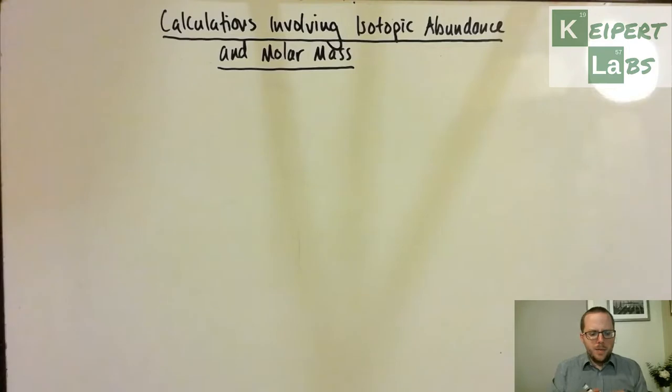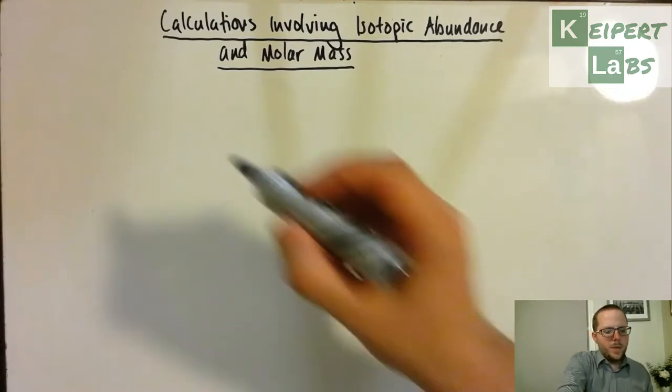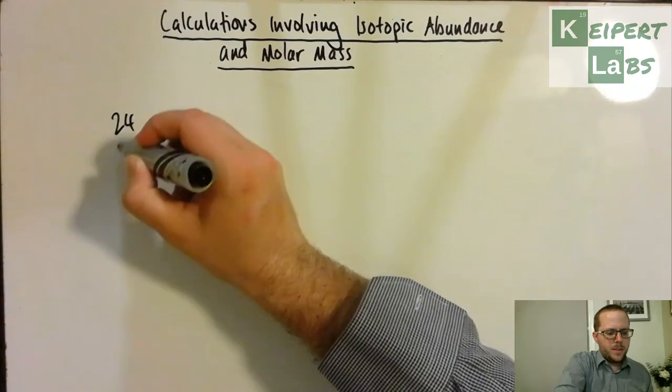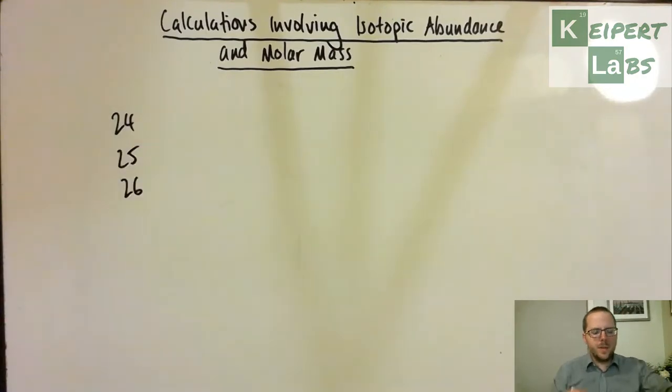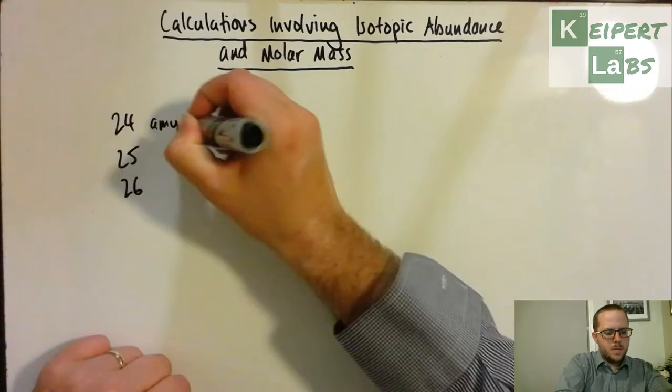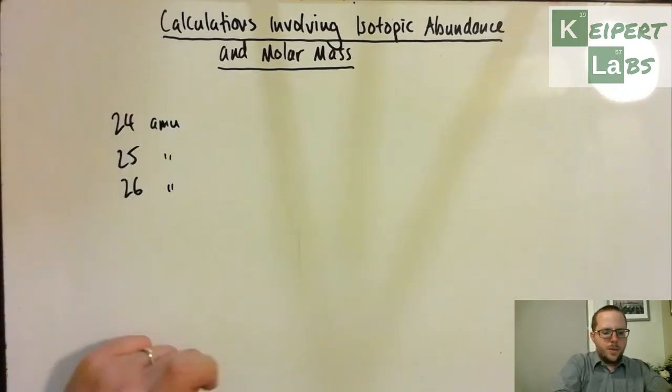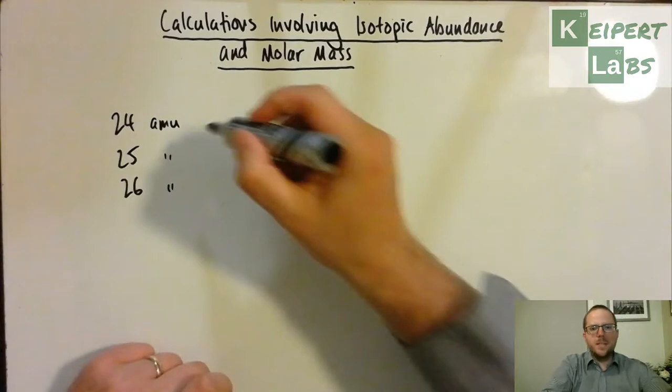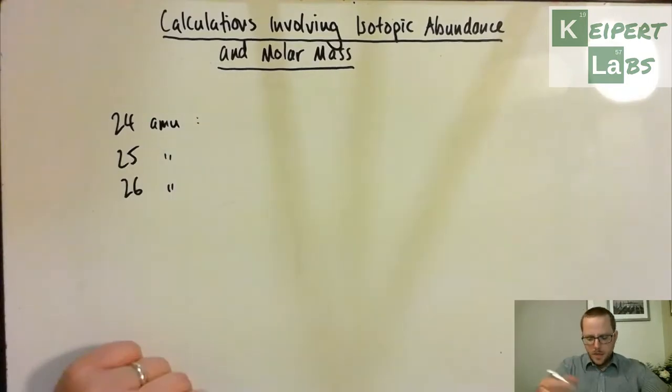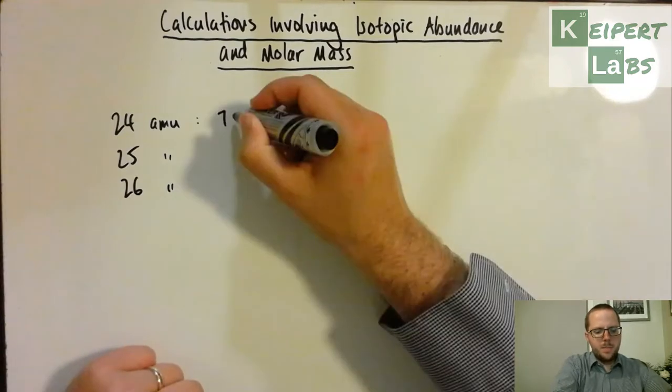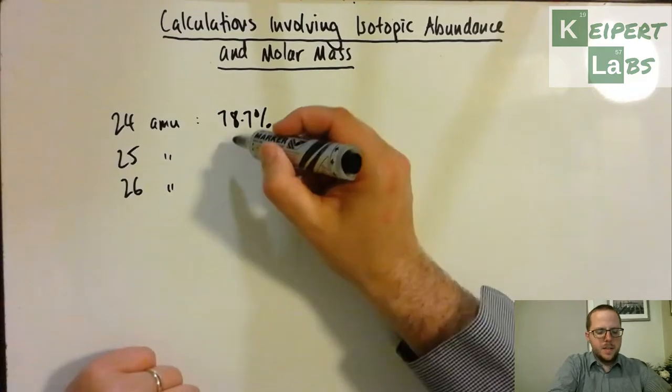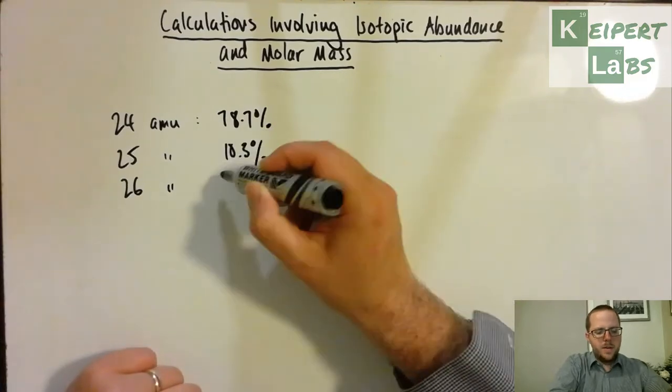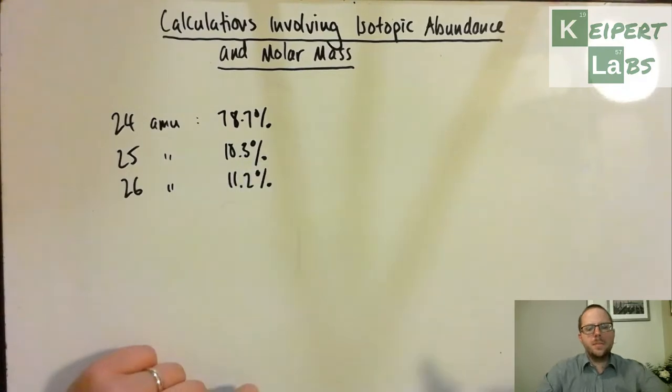The first one involves looking at an element which has three isotopes: 24, 25 and 26 atomic mass units. And so then the isotope with atomic mass of 24 relative atomic mass is 78.7%, 25 is 10.3% and 26 is 11.2%. So then what we need to do is we need to work out the molar mass based on this data.